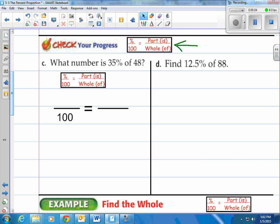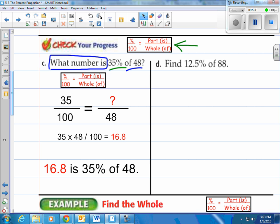What number is 35% of 48? Well, I know I'm looking for the is number, because what number is, so that's going to be right here. 35% is the percent number, so that goes right here, always goes above the 100, and then the of number is the 48, going to be on the bottom there. So cross-multiply, 35 times 48 divided by 100, that's 16.8. So we would say 16.8 is 35% of 48.